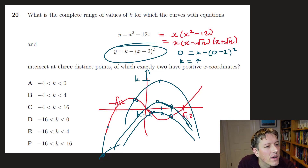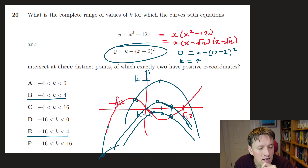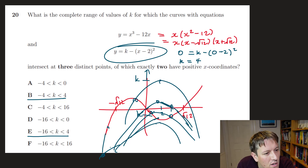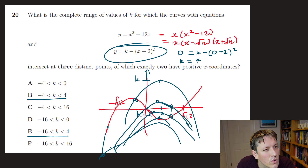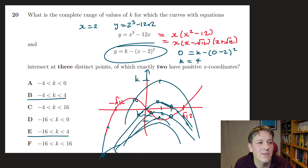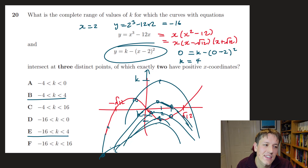For the lower bound, the parabola's vertex (2, k) must not drop below the cubic curve. At x = 2: y = 2³ − 12(2) = 8 − 24 = −16. So when k = −16 the vertex touches the cubic, and below that we lose the three intersections. The lower bound is k = −16, giving the final answer E: −16 < k < 4.